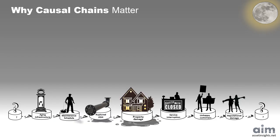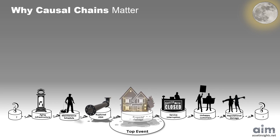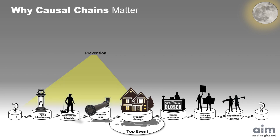Causal chains aren't just hindsight — they're foresight in disguise. At the center of every causal chain is the top event, the pivotal moment where things go wrong. It's also where two kinds of planning converge. On the left, we focus on prevention: how to stop the event from happening. On the right, we turn to mitigation: how to soften the consequences if it does.